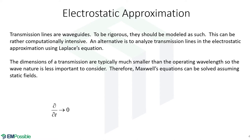To analyze our transmission line more easily, we're going to make an electrostatic approximation, meaning the fields will not be changing with time. Even though we're analyzing a high-frequency transmission line, almost always that line is incredibly small compared to the wavelength of the frequency it's carrying. So the wave nature is essentially negligible, and we can treat this fairly accurately as an electrostatic approximation. We are making an approximation — the simulation won't be able to handle loss, so we will be analyzing lossless transmission lines.